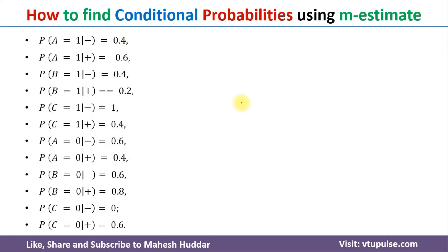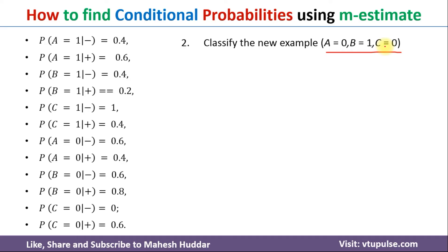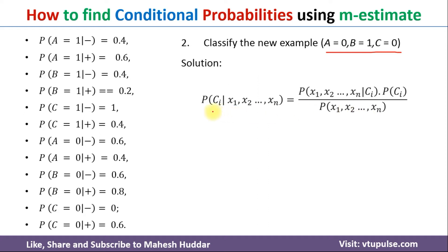Now we will use these conditional probabilities to classify the new example into one of the classes. The new example given to us has A equals zero, B equals one, and C equals zero. To classify this example, we use the Naive Bayes classifier formula. That is, probability of class C_i given the evidence, which is equivalent to the probability of the given conditions given the class, times the probability of the class, divided by the probability of the given conditions (the evidence). We will use this equation to solve the example.